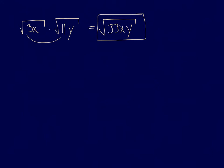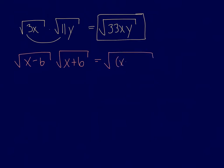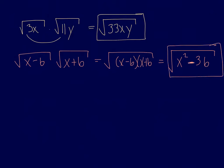Next, let's say I have the square root of (x minus 6) times the square root of (x plus 6). Multiplying those together gives (x minus 6)(x plus 6), which when FOILed is x squared minus 36. This does not simplify to x minus 6 because of the minus sign, so the square root of (x squared minus 36) is actually our final answer.